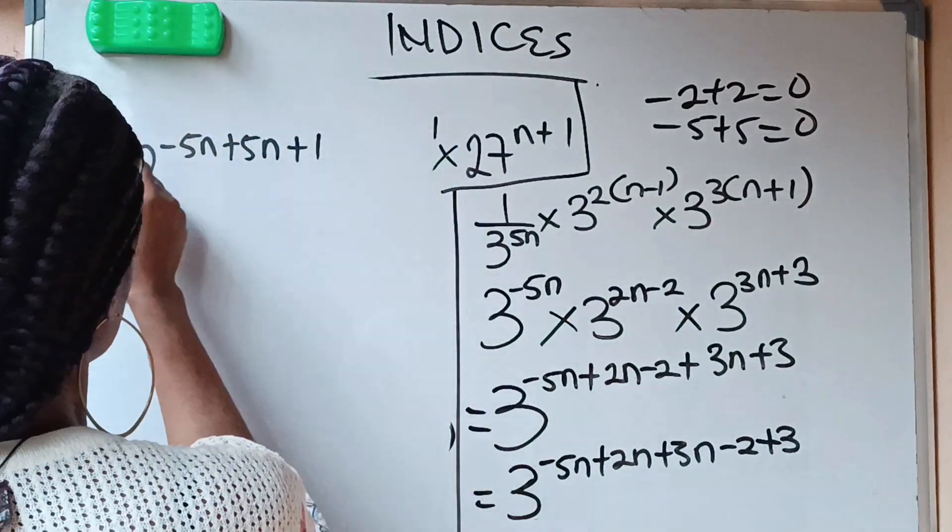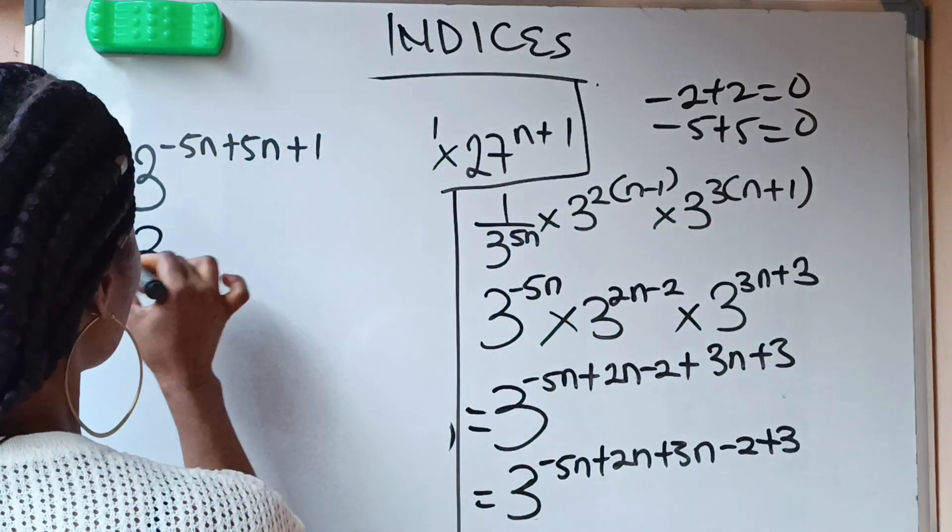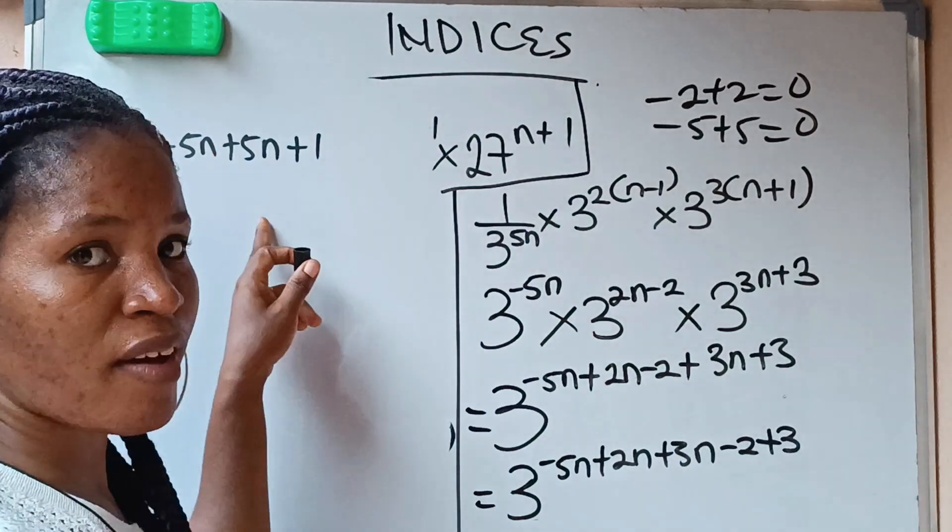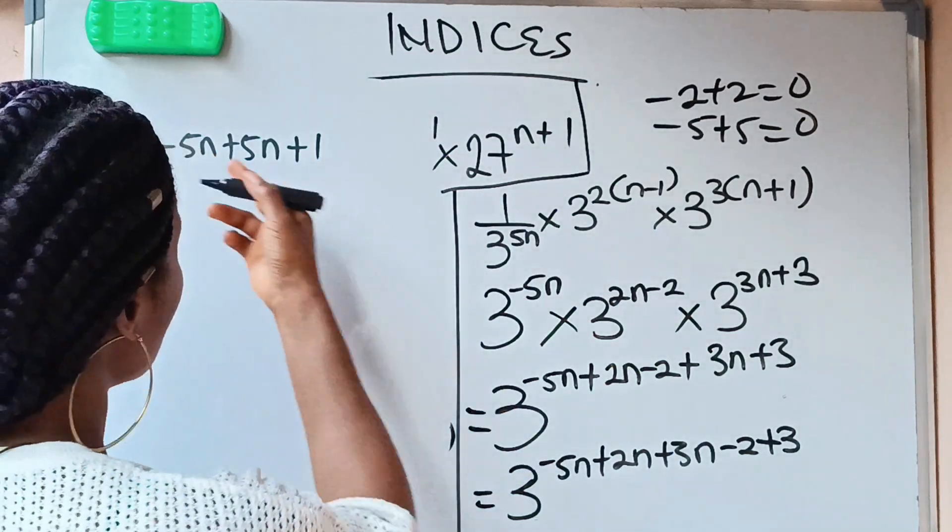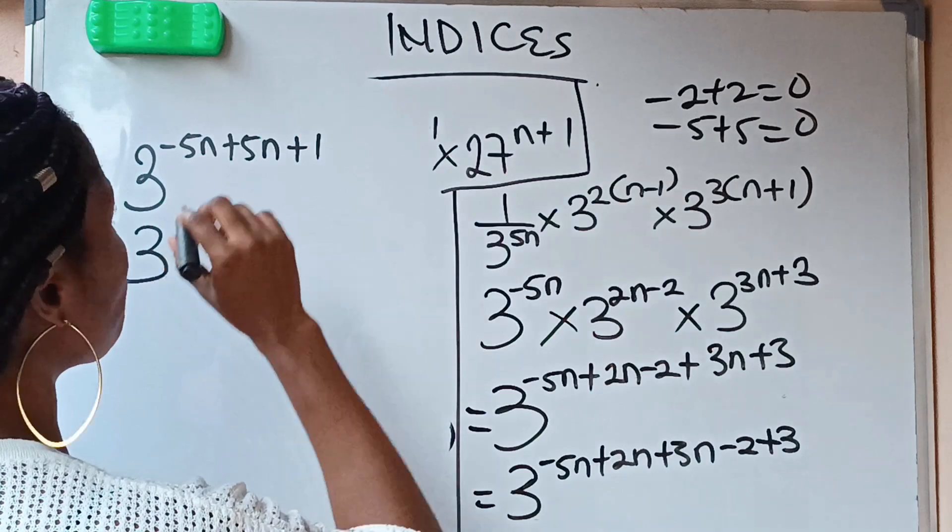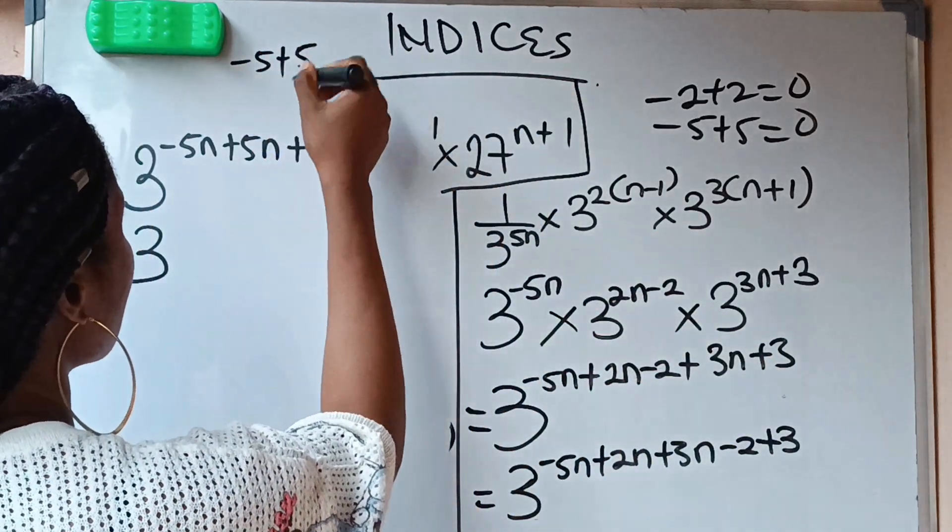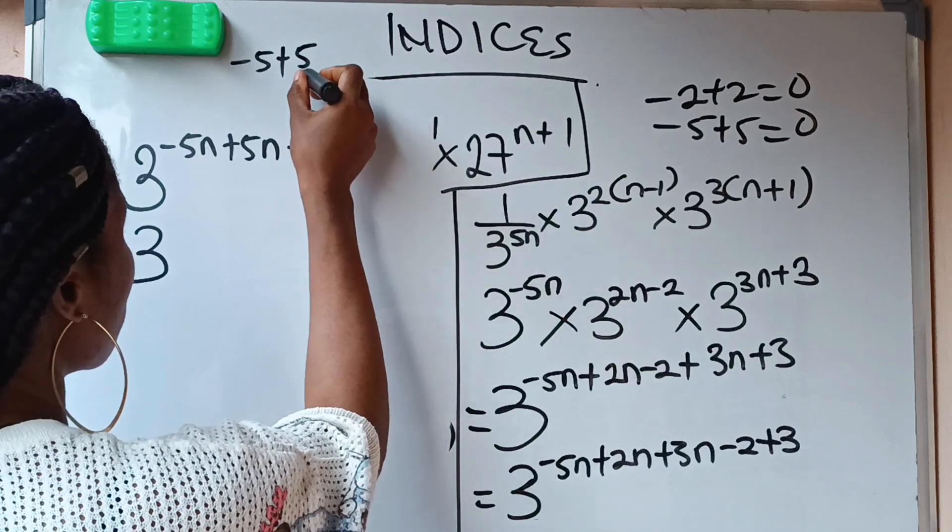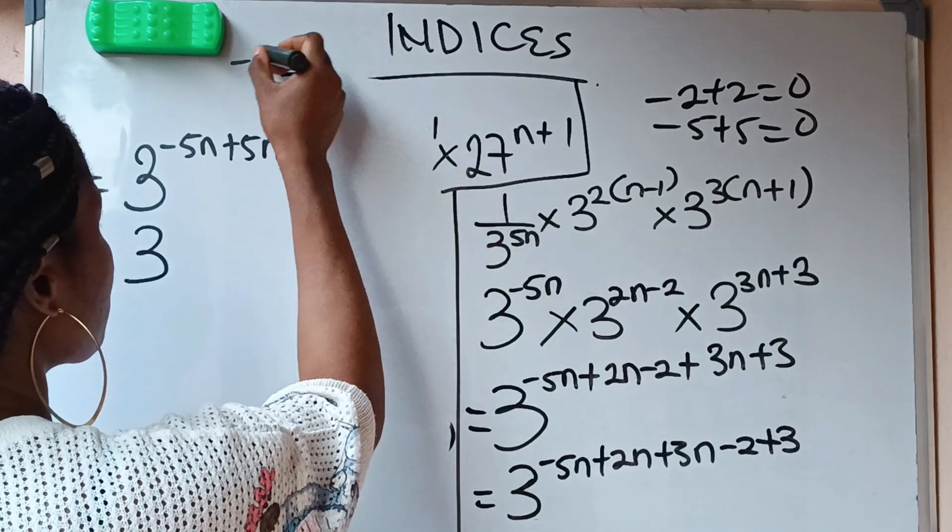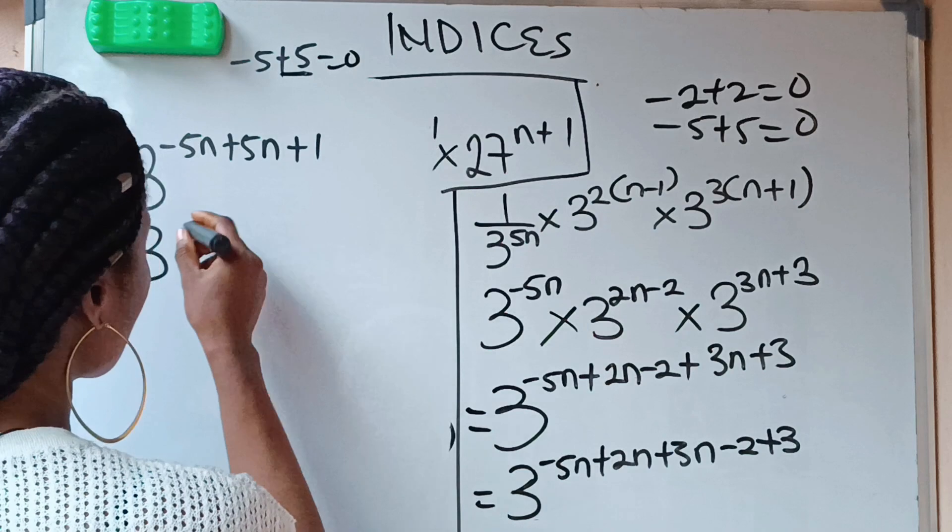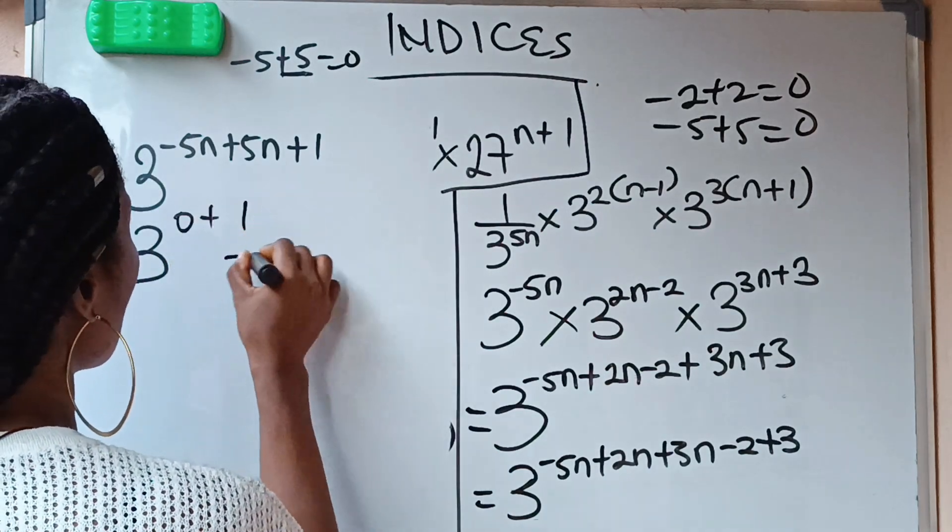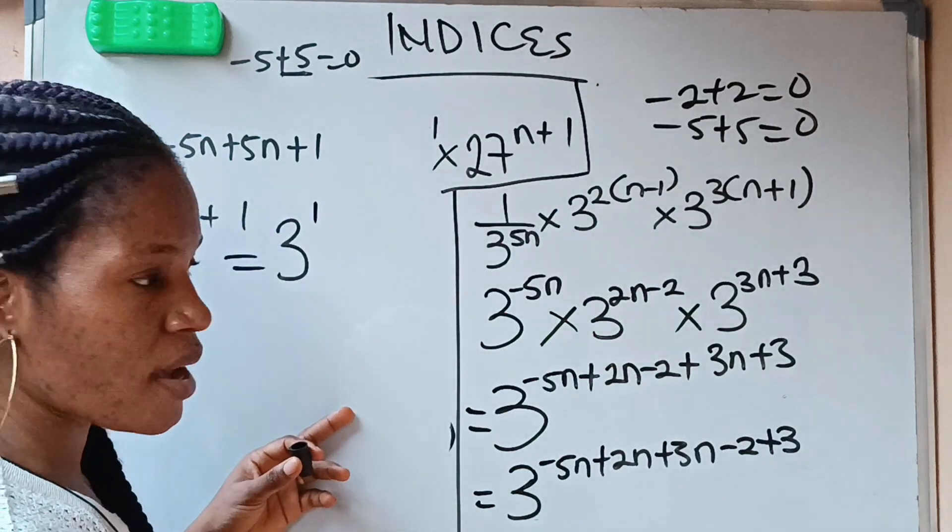Now let's solve this. This is same as 3 raised power of minus 5n plus 5n is 0, right? Minus 5n plus 5n is 0. It's just like saying if you say minus 5 plus 5 is 0, because it's same as 5 minus 5, which is 0. So we are going to have 0 plus 1, which is the same thing as 3 raised power of 1.